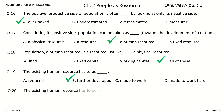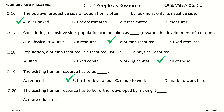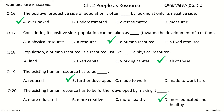Question 20: The Existing Human Resource has to be Further Developed by making it ___. The options are: More Educated, More Creative, More Healthy, More Educated and Healthy. Your time to choose. And the answer is: More Educated and Healthy. So, the Existing Human Resource has to be Further Developed by making it More Educated and Healthy.